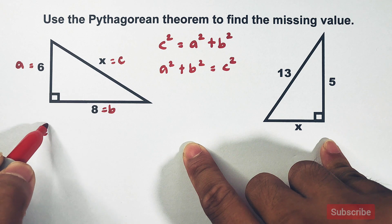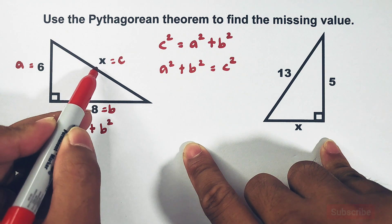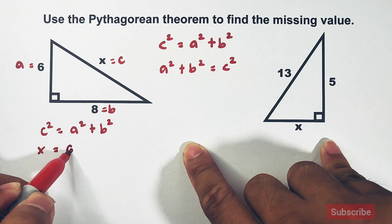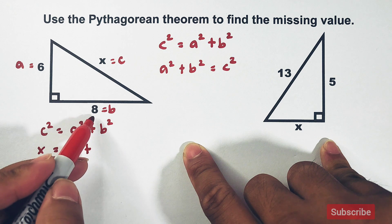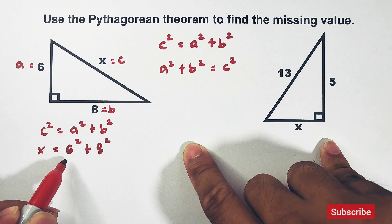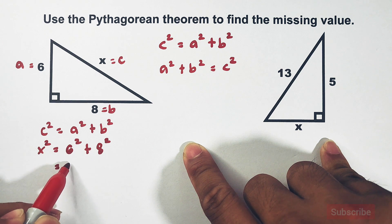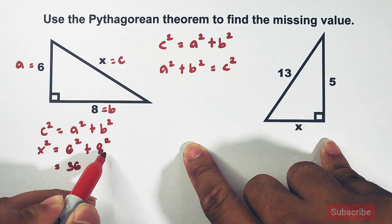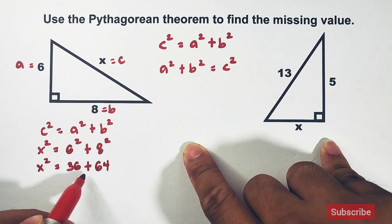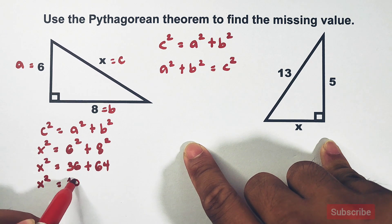We have c² = a² + b². Substituting: x² = 6² + 8². Simplifying: 6² = 36 and 8² = 64, so x² = 36 + 64, which equals 100.